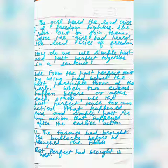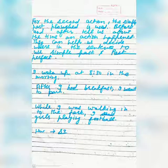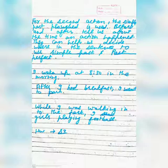For example: the farmer had brought the bullock carts before he ploughed the field. Yahan peh kaam pehle huwa hai — bullock khariidne ka — toh had brought. Since the action of bringing bullocks had happened before ploughing, past perfect had brought is used. For the second action, the simple past tense is used. Before and after tells us the time an action is happening — before mein pata chalta hai kaam pehle huwa hai, after mein pata chalta hai baad mein huwa hai. This can help us decide where in the sentence to use simple past and past perfect.